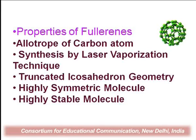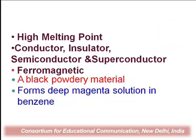Fullerenes are very highly symmetric and highly stable molecules. Buckminster fullerene has a high melting point. Depending on doping with other molecules, it can work as a conductor, insulator, semiconductor, or superconductor. Fullerenes are ferromagnetic substances, found in the form of black powdery material, and form a deep magenta color in benzene.